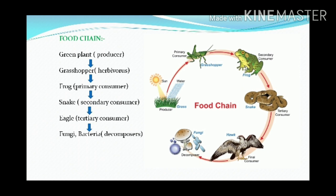If a food chain is to be converted into a food web, there should be interactions between the different components. Any living organism can be prey to different predators, and moreover a predator can also be a prey for others. For example, a frog eats different insects, and the same frog can be eaten either by a snake or by a hawk.